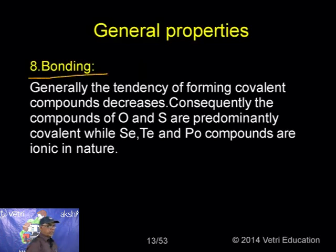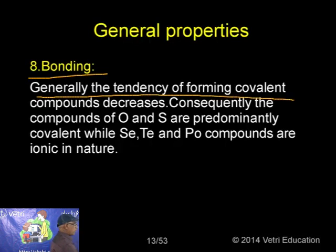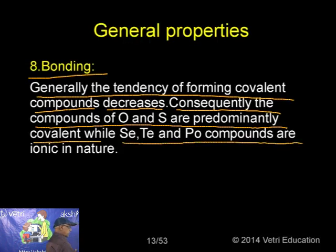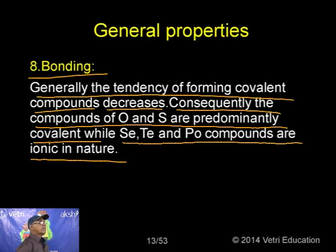For bonding, the tendency to form covalent compounds decreases down the group. Compounds of oxygen and sulphur are predominantly covalent, while selenium, tellurium, and polonium compounds are more ionic. So covalent character decreases and ionic character increases down the group.